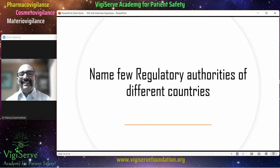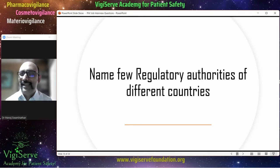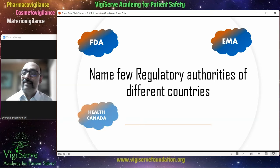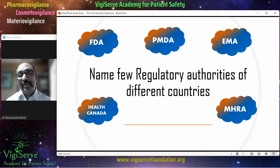The interviewer may also ask you to name a few regulatory authorities. Most people would talk about the FDA or the European Medicines Agency, but if you can give other examples that will be very useful — for example, PMDA in Japan, Health Canada, or the MHRA in the UK, or you can talk about other countries as well.